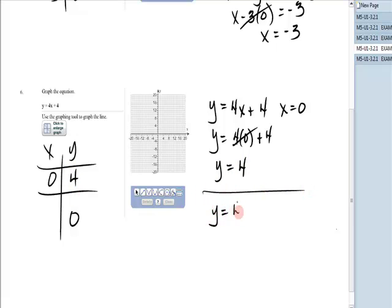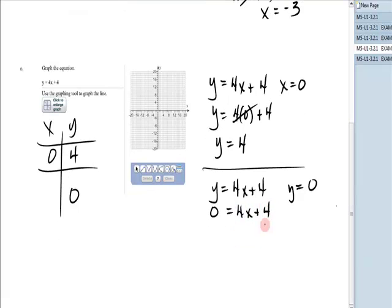Then I still have y equals 4x plus 4, y is zero. Zero is equal to 4x plus 4. I have a little bit more work to do on this one. Subtract 4, negative 4 is equal to 4x, divide by 4, negative 1 is x. Now in this video, this grid is very, very tiny, so I'm not going to get a great picture. I'll do the best I can. You'll have the option to enlarge. I don't.